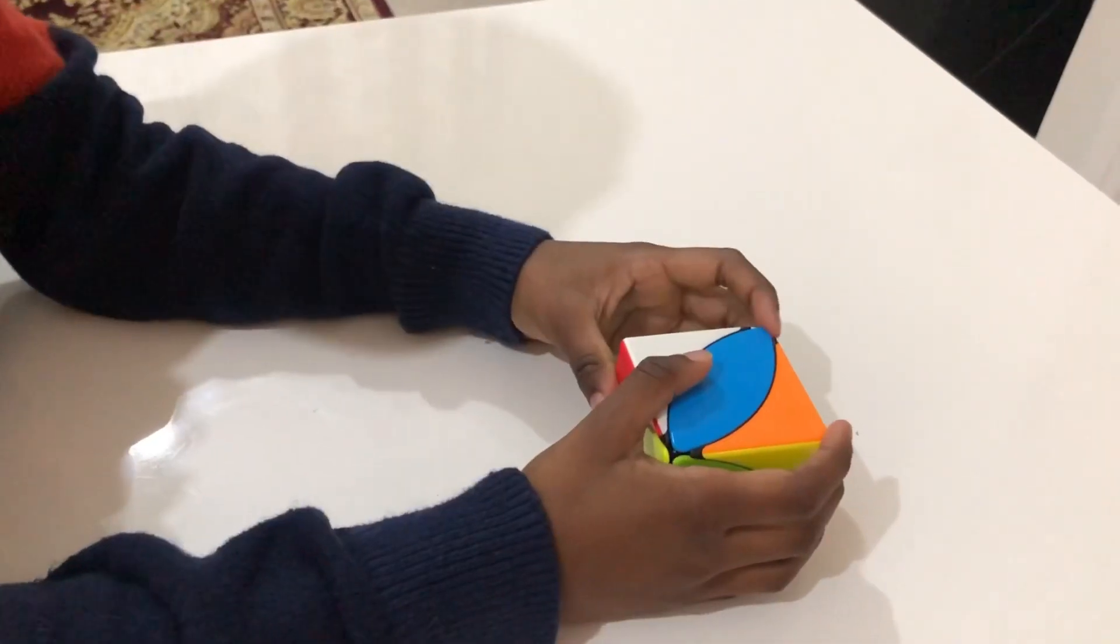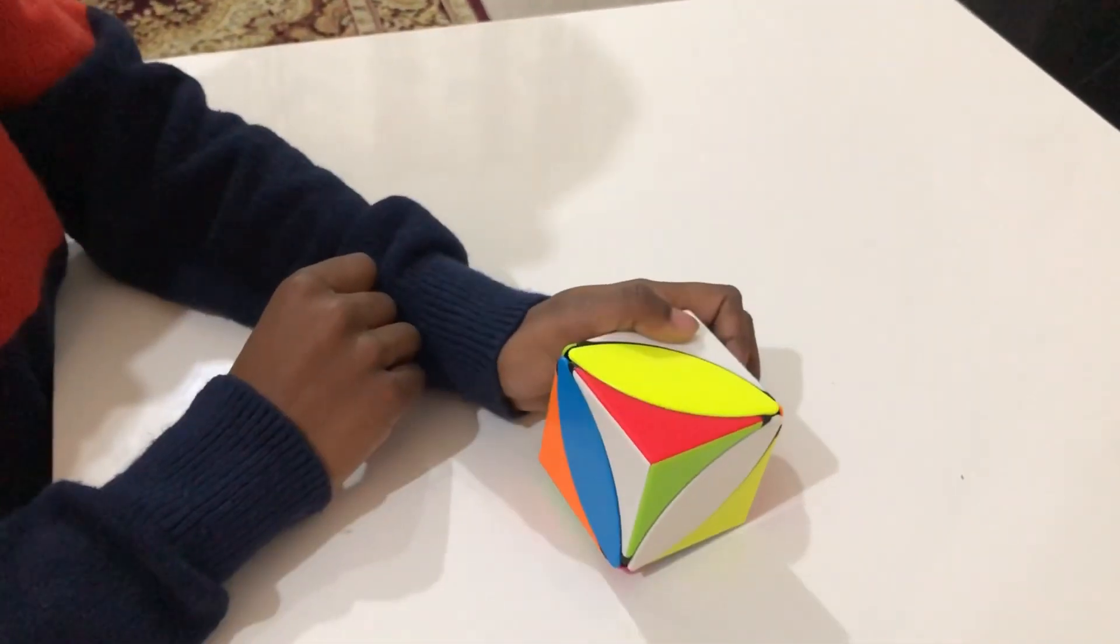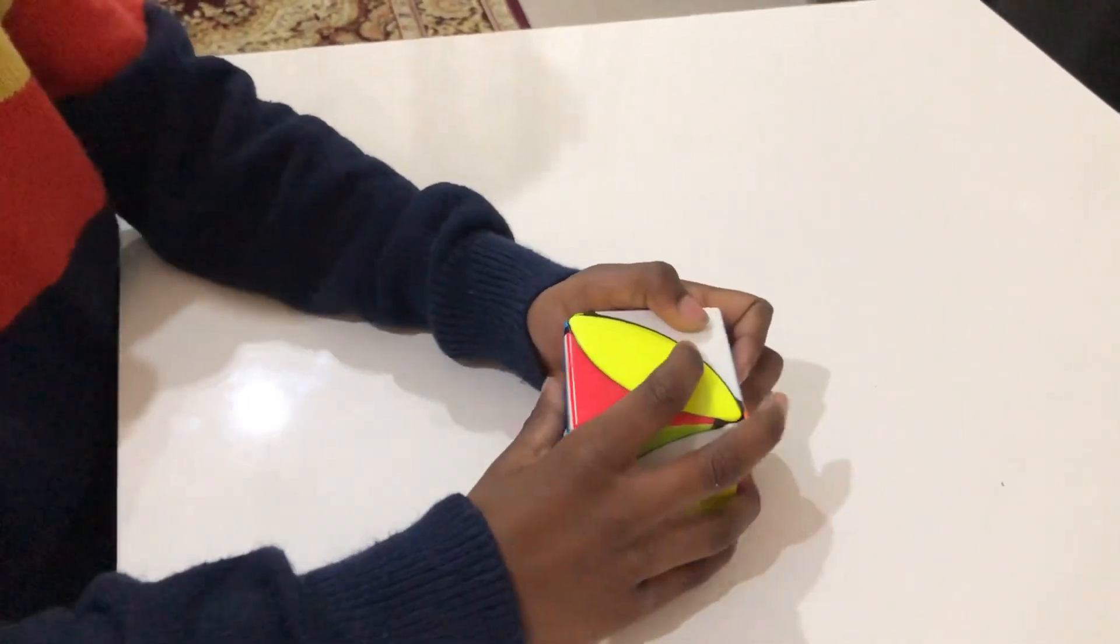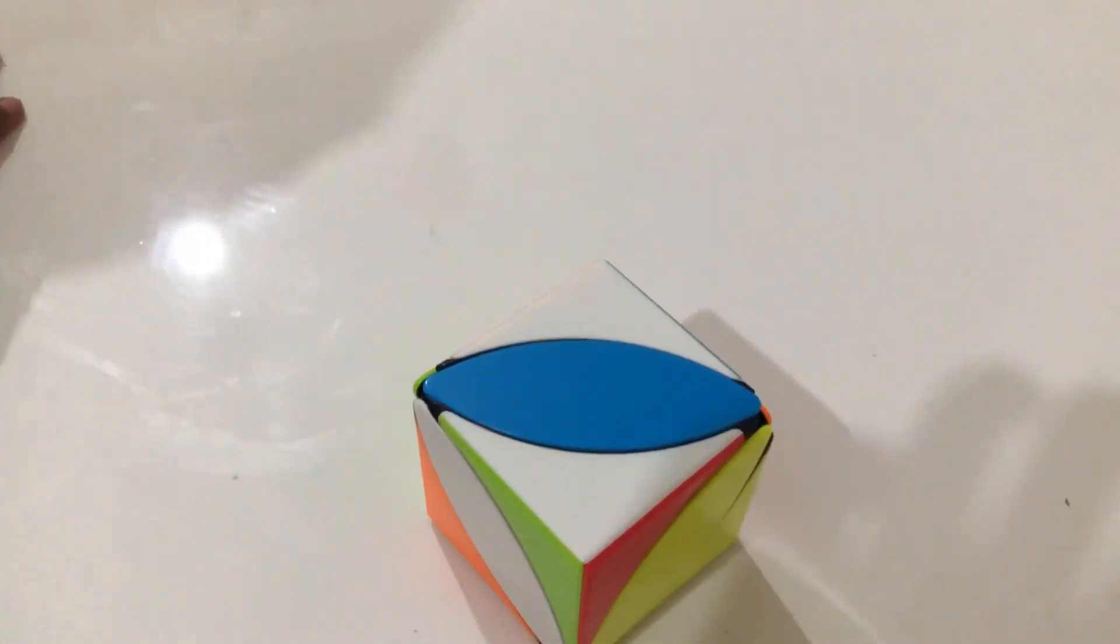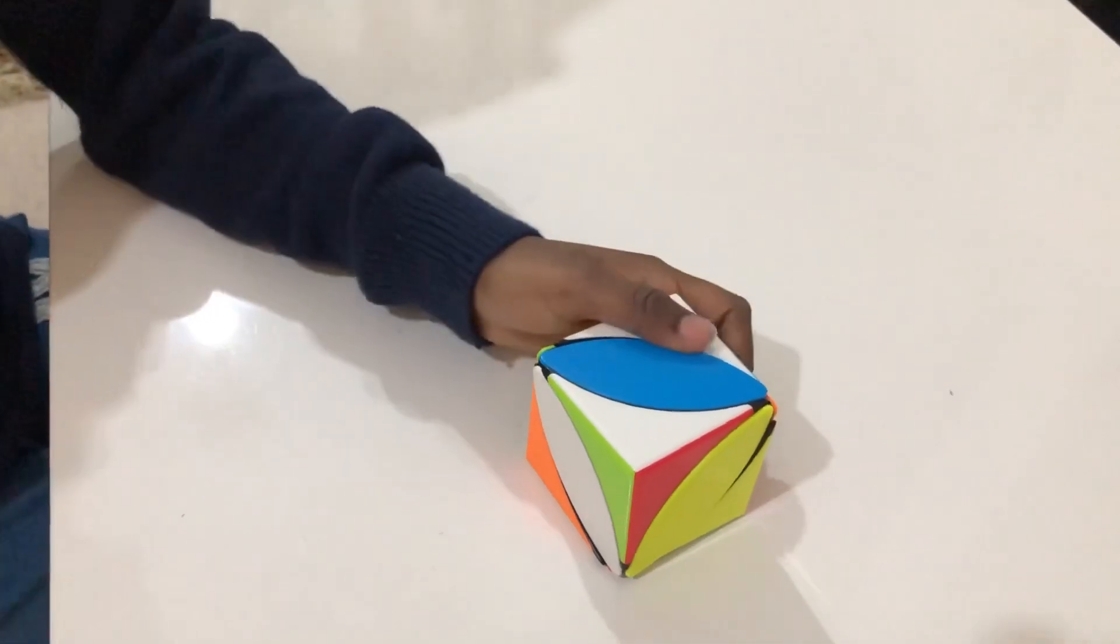Let me solve white side. First we need to bring corner pieces. Now bring the center piece.